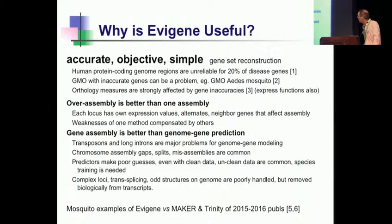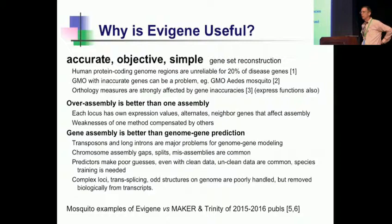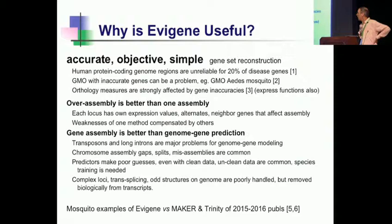The next two bullet points are my explanations of why I think I'm getting the observed higher accuracy rate — they're not a priori reasons. Why is overassembly better than doing one assembly, say with Trinity? It's because each locus has different properties — different expression properties and different neighboring gene properties. These all affect how that locus should best be assembled. And each assembler product has its own weaknesses; if you use many assemblers, their weaknesses are different, and among the overassembly you end up having the best correct gene.